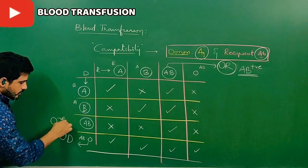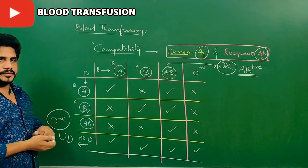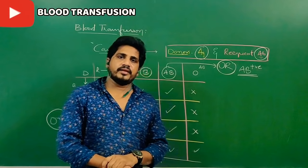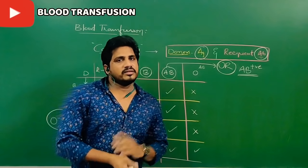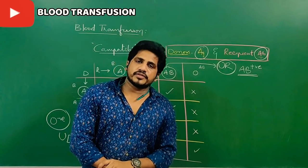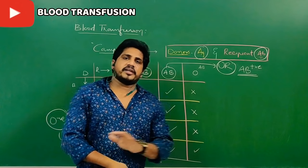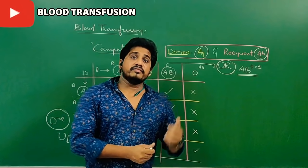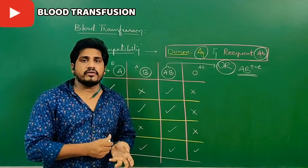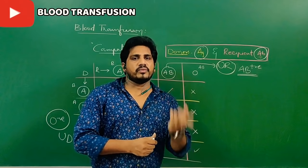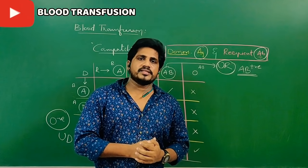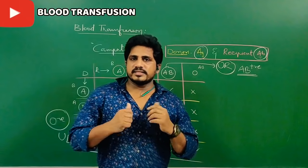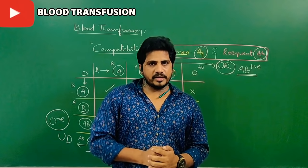Who discovered all these blood groups? Karl Landsteiner. Who discovered the RH factor? Also Karl Landsteiner. RH factor was found in the Rhesus monkey. ABO blood groups were found in 1900, and the RH group system was found in 1901 — one year after the ABO blood grouping system. This is the data about different blood groups and their compatibility.